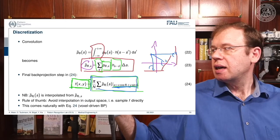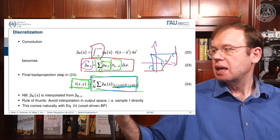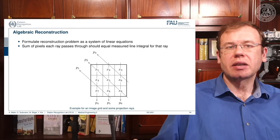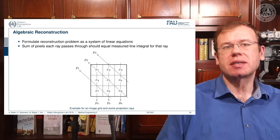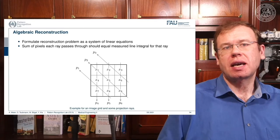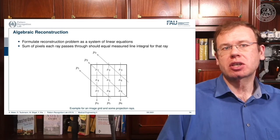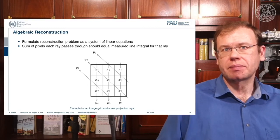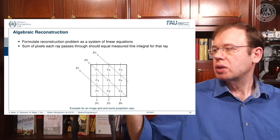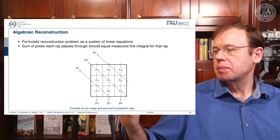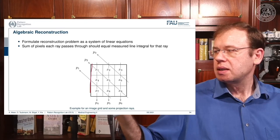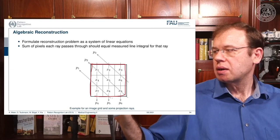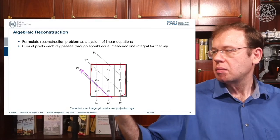There is an alternative called algebraic reconstruction. The algebraic reconstruction is essentially the solution that emerges if you discretize first and then solve. The filtered back projection considers everything in the continuous domain and discretizes towards the very end. If we consider the reconstruction problem in a discrete way, we can describe the CT problem as a set of unknowns and some projection rays.